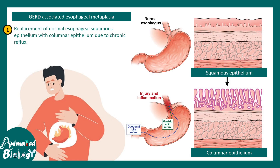GERD is the underlying problem. Gastric HCl tries to come up from the stomach into the esophagus, and the esophagus is not supposed to be exposed to gastric acid. So the squamous epithelia try to cope with this acid-induced stress by changing themselves into columnar epithelium. This is an adaptation response, but it's a temporary solution — long-term GERD and acid reflux can turn into cancer.